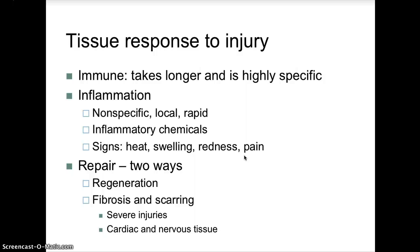The last topics are immunity and cancer. Immunity takes longer and is highly specific; inflammation is non-specific, local, and rapid. Inflammatory signs include heat, swelling, redness, and pain. There are two types of tissue response repair: regeneration of new tissue, or fibrosis and scarring — which occurs with severe injuries or damage to cardiac and nervous tissue.